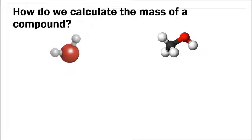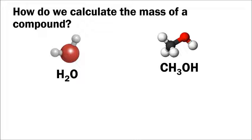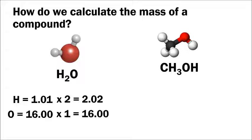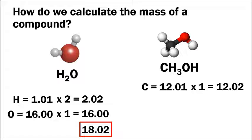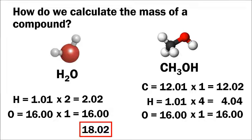To calculate the mass of a compound, look up the atomic mass of each element and add them all up. For water (H₂O): hydrogen has an atomic mass of 1.01 and there are two hydrogens, and oxygen has an atomic mass of 16.00 with one oxygen, giving a molar mass of 18.02. For methanol (CH₃OH): carbon is 12.01 × 1, hydrogen is 1.01 × 4, and oxygen is 16.00 × 1, giving a total mass of 32.06.